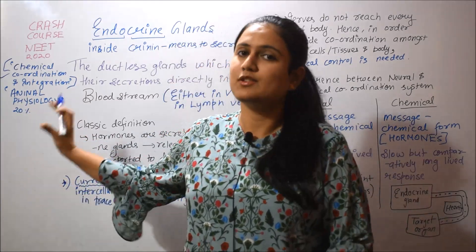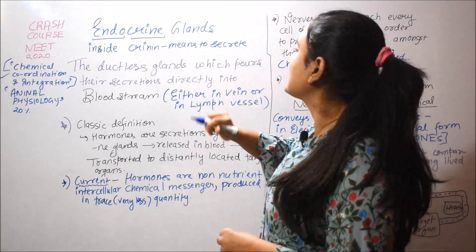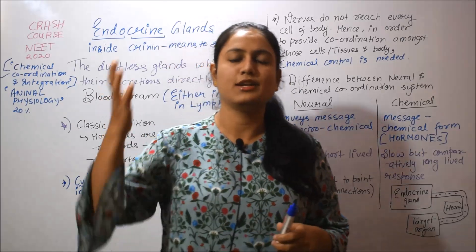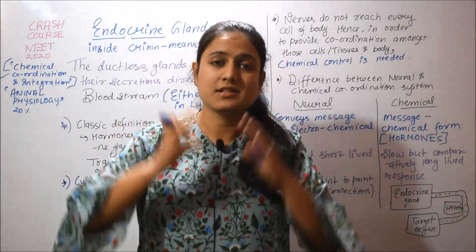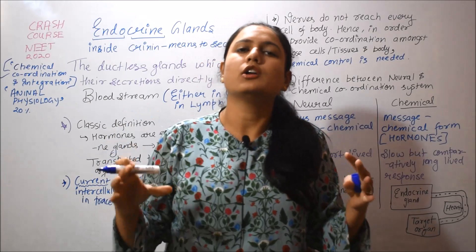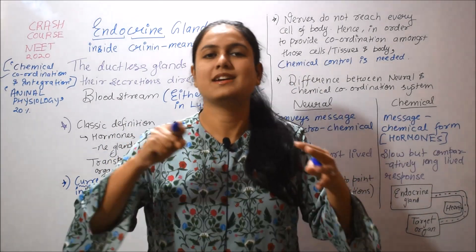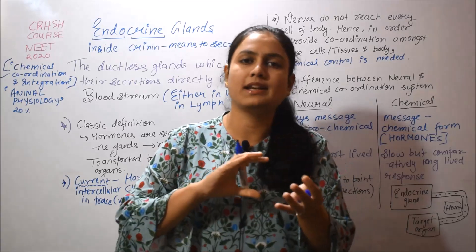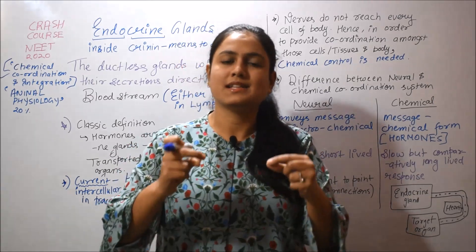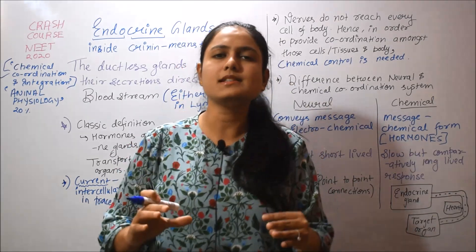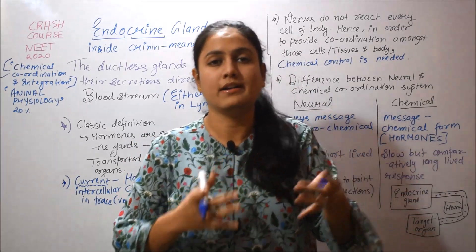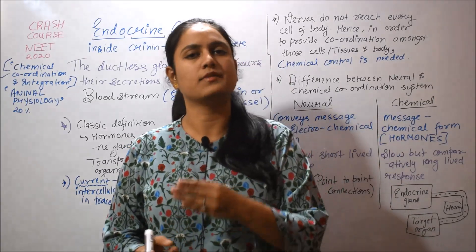We are starting with Chemical Coordination and Integration, which is the last chapter of animal physiology and human physiology. We have two systems in our body. One is the Neural Control and Coordination system, which covers the central nervous system and peripheral nervous system, coordinating different organs. However, the neural control and coordination system does not reach all the cells in the body. This is why we need the chemical control and coordination system — also called chemical integration.